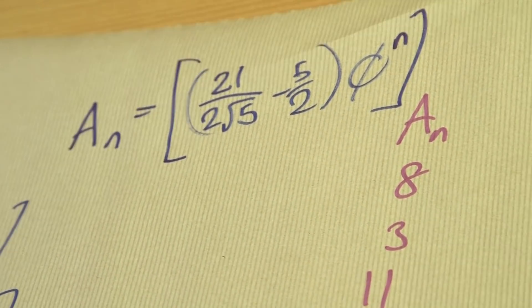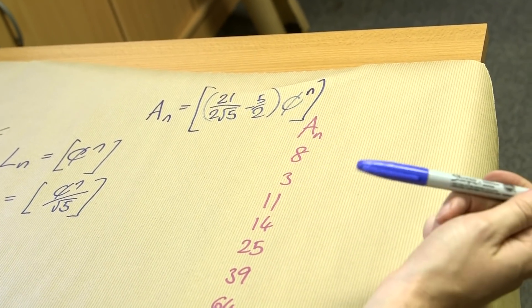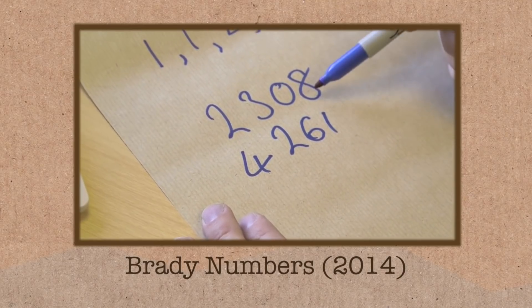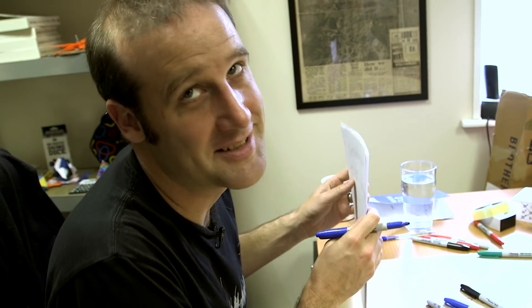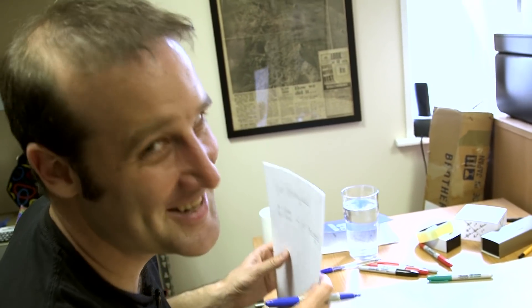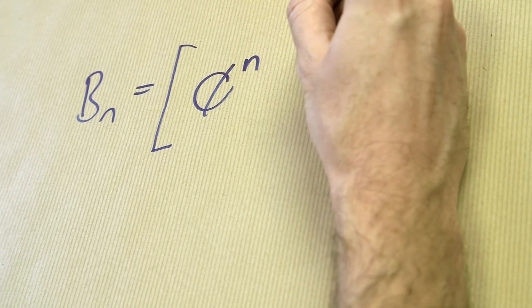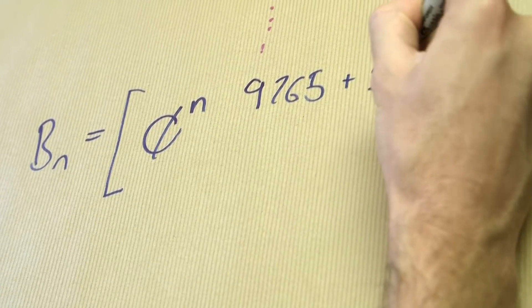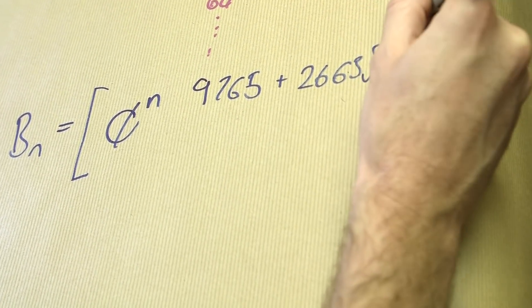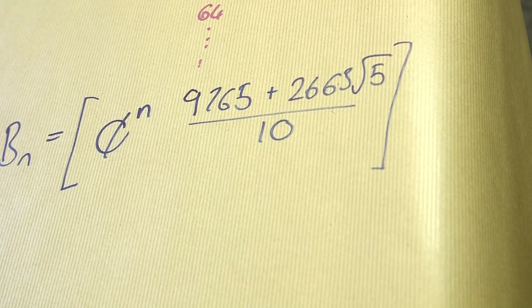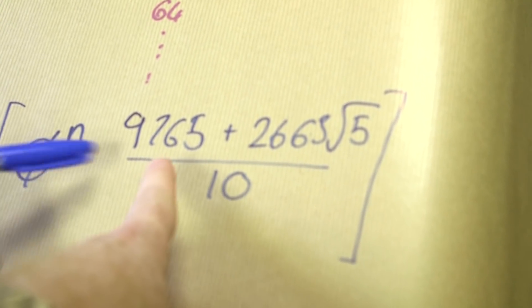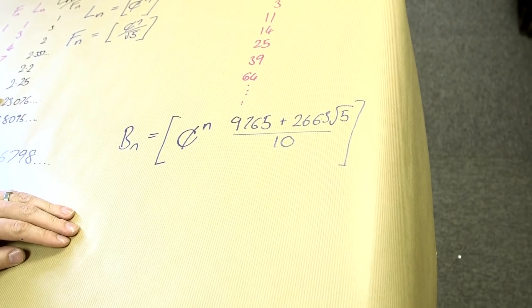Not quite as clean. People can check that — it'll be kind of fun. So for any one of these, if you put in n equals 4 and round it, you get 14 out the other side. I had so much fun I worked out the Brady numbers formula too. I'd love it if it was something perfect like the square root of 10, but sadly it's not. It's just 6. So the Brady number formula equals the golden ratio to whatever the n is, times 9,765 plus 2,663 times root 5, divided by 10. That's the Brady number formula.